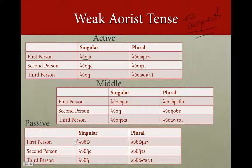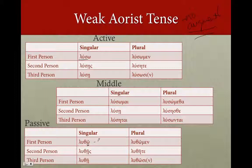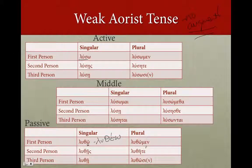And in the passive, we're going to take our passive stem, knock off the augment. Notice the accent here — what's actually going on is this is an epsilon contract. The stem is really lushe, and so we've got a contract: lushe and omicron gives us lusho. Lusho, lusace, lushe, lusomen, lushe, lusosin. Remember, the aorist passive uses active endings.